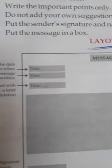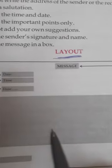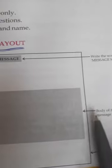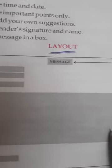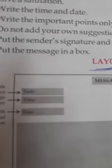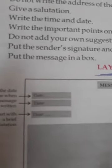After the date and time, leave one line, then write the salutation — start the message with 'Dear.' After the salutation there is a large space for the content — the message you want to convey goes here as the body. After the body, leave one line, then write the signature and name of the person writing the message. And remember — don't forget to put the entire message in a box.